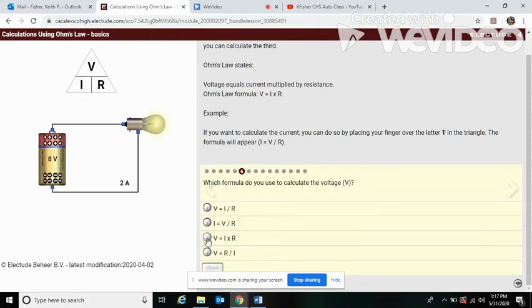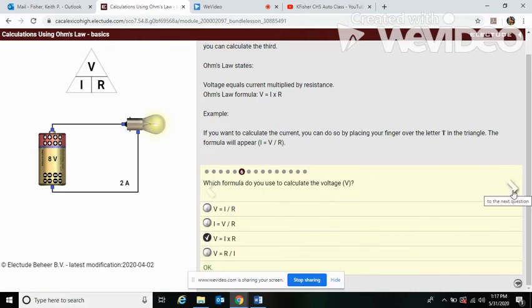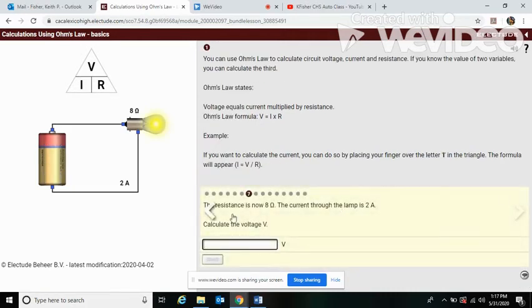The resistance is now 8 ohms and the current is 2 amps. So what is the voltage? Well, 8 times 2 is 16.